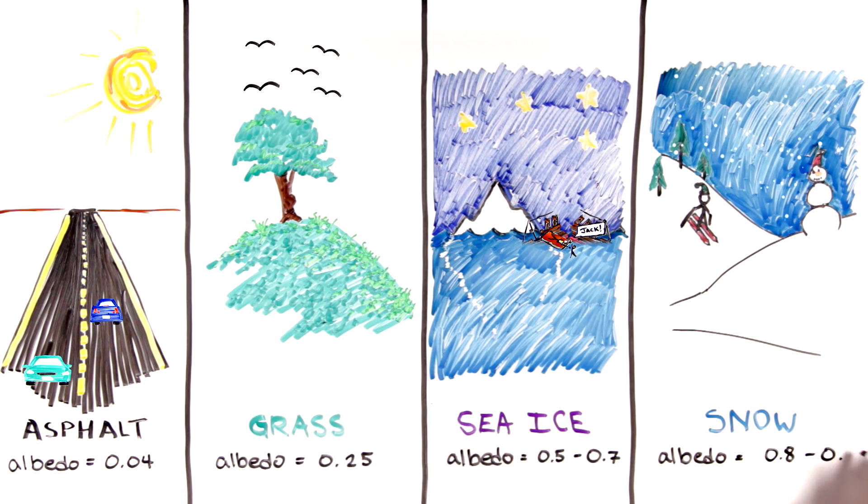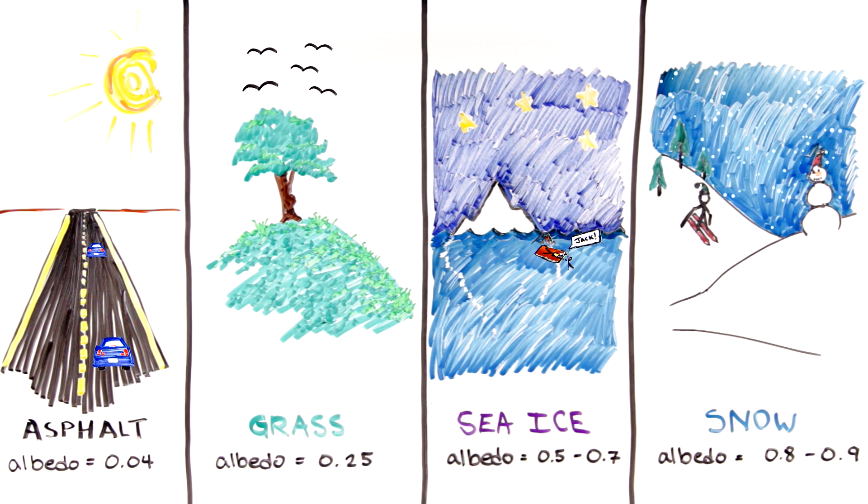Very light surfaces, such as sea ice or snow, reflect a lot of light, so they appear bright.